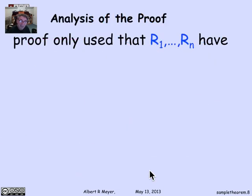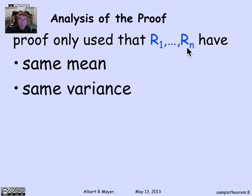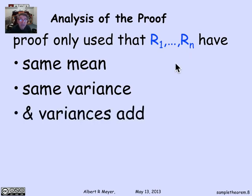Now if we go back and look at this proof, the only thing that it used about the r's was that they had the same mean mu, and they actually had the same variance sigma squared, and that the variances added. That was the key step in the proof, that the variance of the sum of the r's was equal to the sum of the variances.